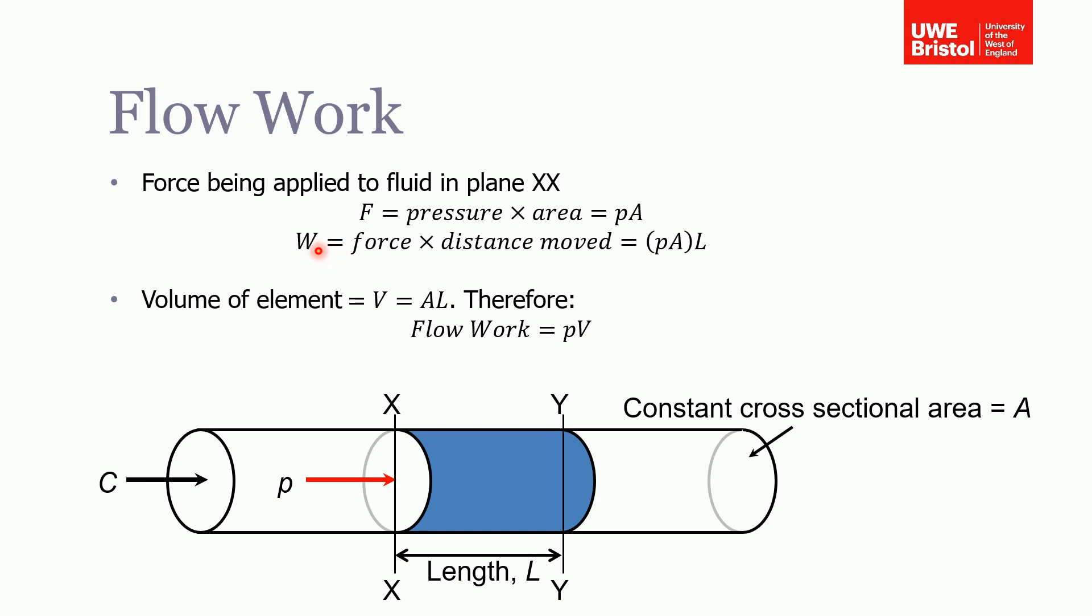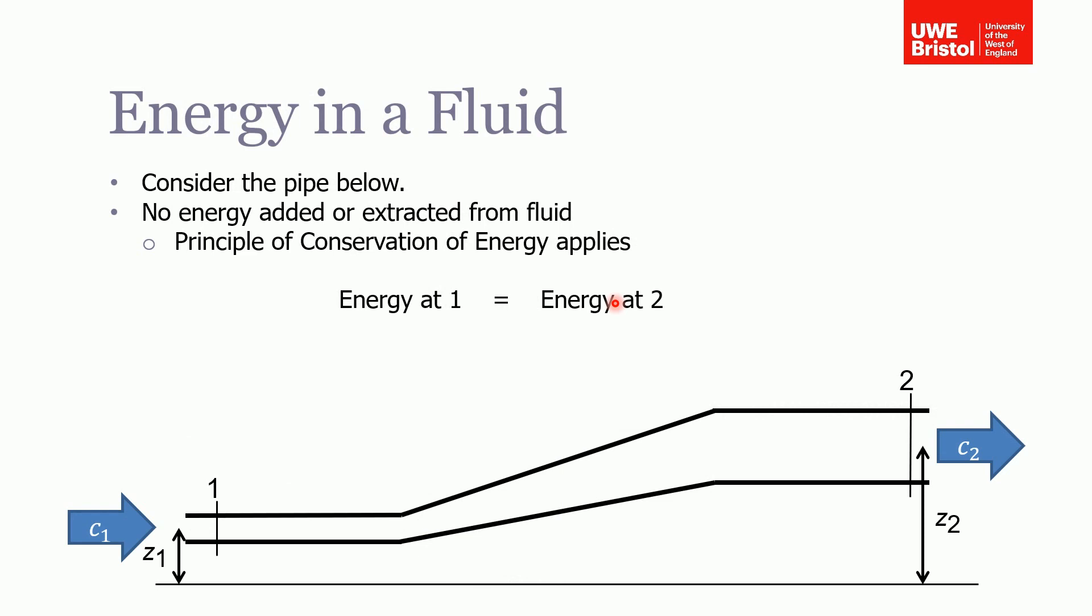The work that's done to this fluid, the work is the force times distance, so in this instance, our distance is L. So we've got this pressure acting on this area, giving us a force over this distance. So we end up with pressure times area times length. But as we know from simple geometry, the volume of this fluid is equal to the area times length. Therefore, the flow work from this equation is equal to pressure times the volume. So that's where the PV term comes from.